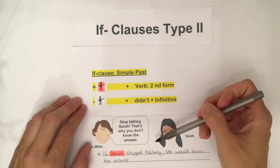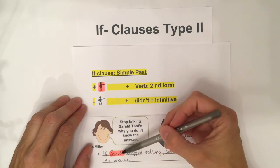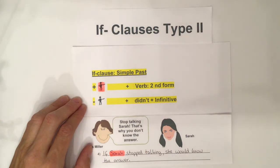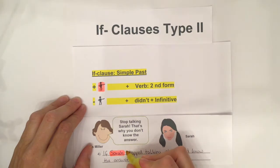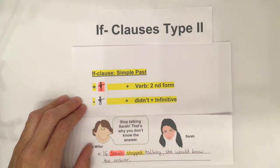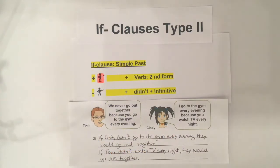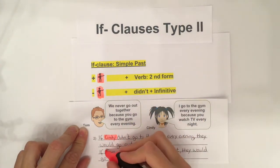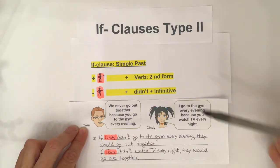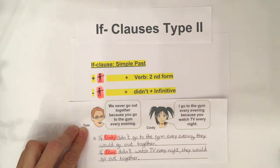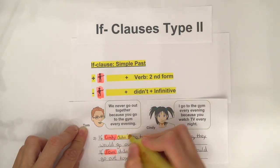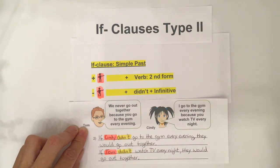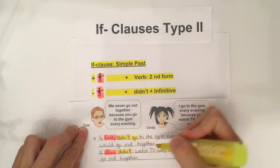Let's have a look at our example. We have 'if' plus 'Sarah' — that's the person — plus the second form verb. For a negative example, we again have 'if' plus the person — here we have Cindy or we could have Tom — and then for a negative sentence we need 'didn't' plus the infinitive form, for example 'go' or 'watch'.